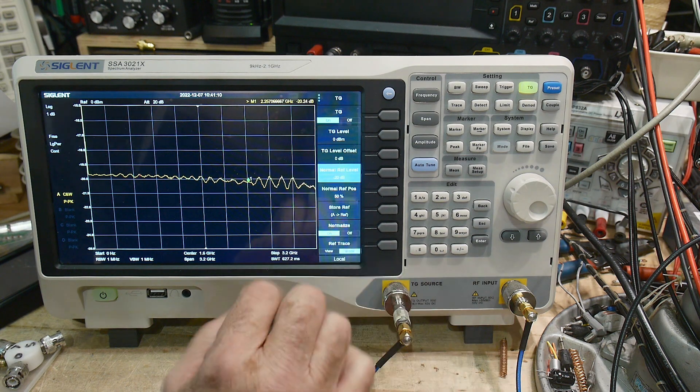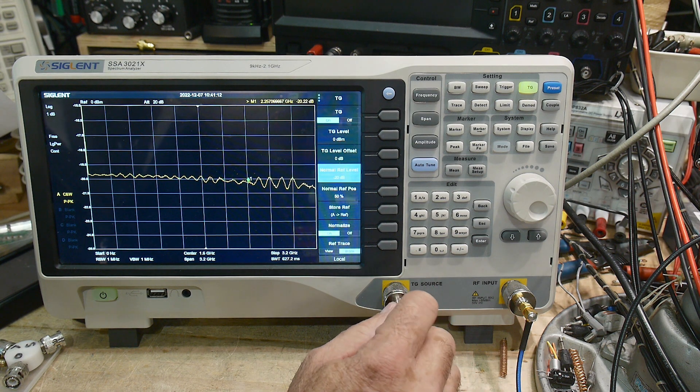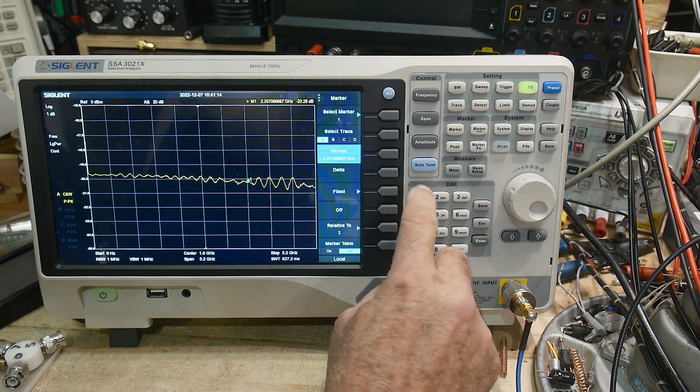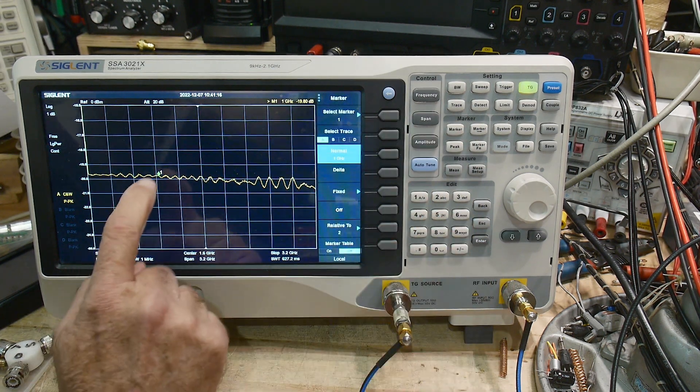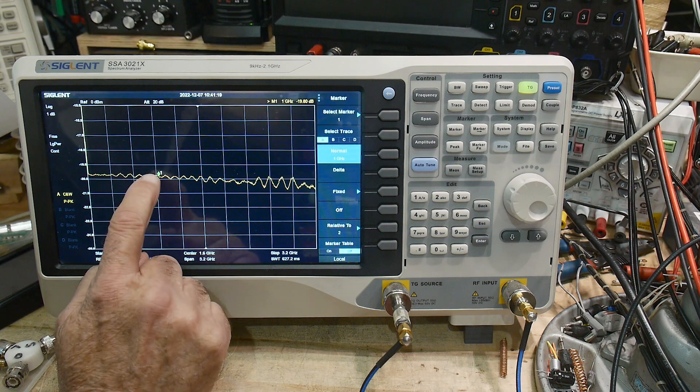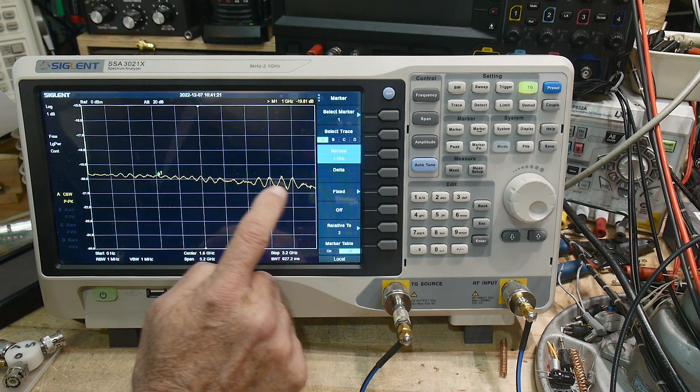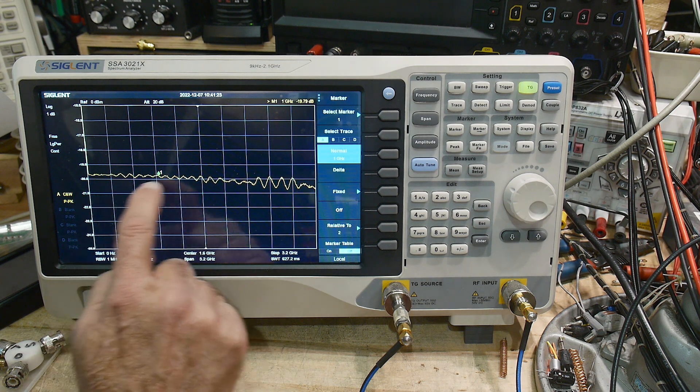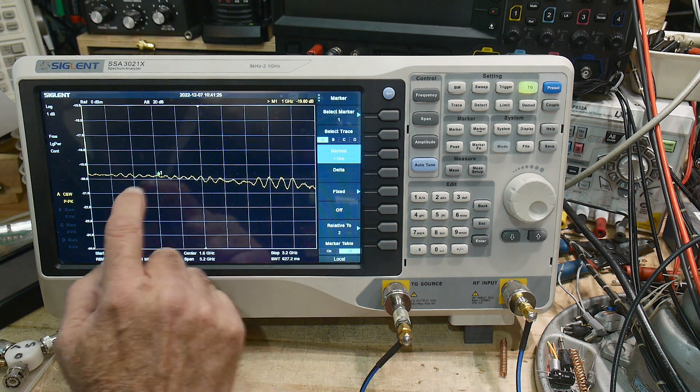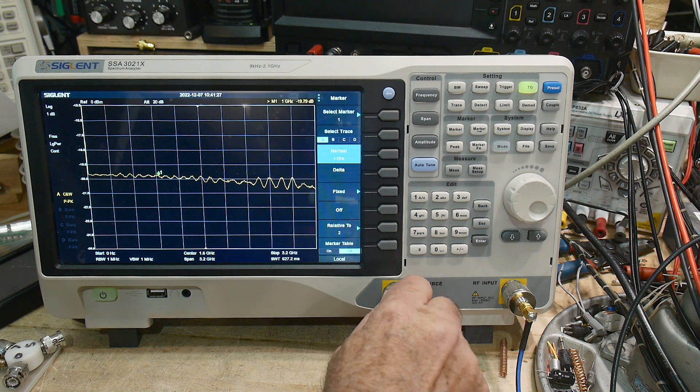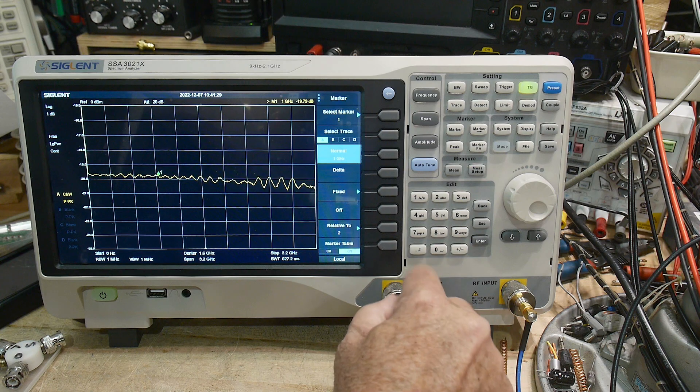This attenuator is only specified to 1 gigahertz. So let's set our marker to 1 gigahertz. Really, this is what the manufacturer was guaranteeing it to, but it's actually working okay outside of that. It's dropping down maybe a dB, but it's still usable out there.